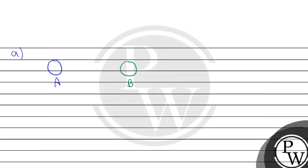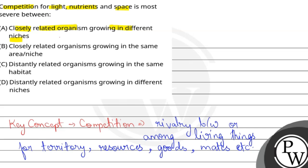Now, A and B are closely related to it. But the place between them is different. So if the place between them is different, there is no chance that there will be competition. So option A is not going to happen. Now let's see the second option. The second option is closely related organisms growing in the same area or niche.